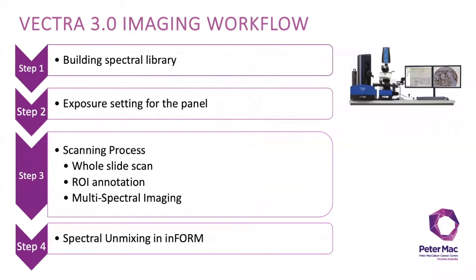The method allows the use of antibodies raised in the same species and also the detection of low abundance proteins. This slide shows an overview of the Vectra 3 imaging workflow which I have divided into four main steps. The first step is to image and build your spectral library in InForm.